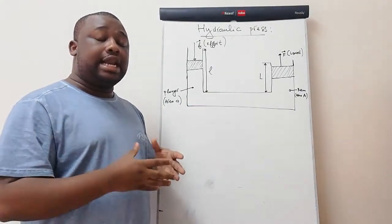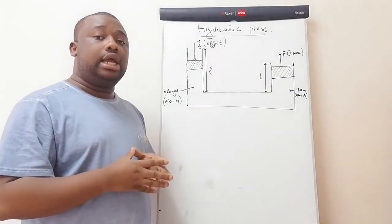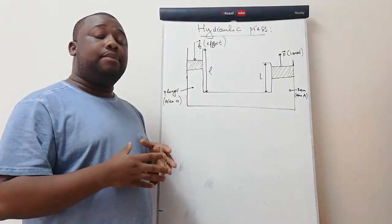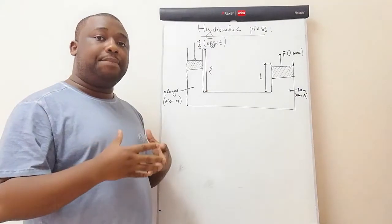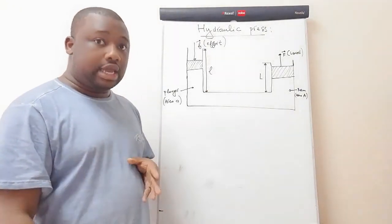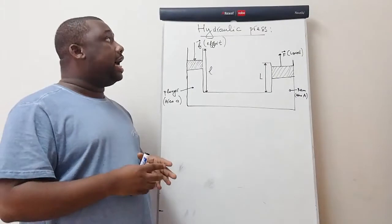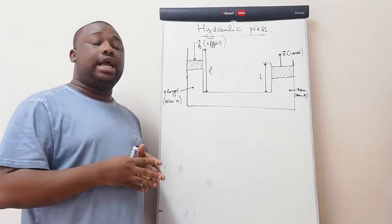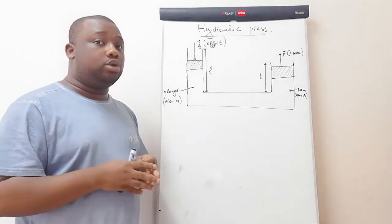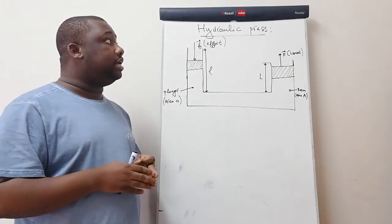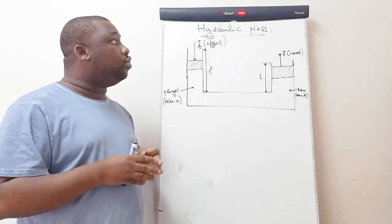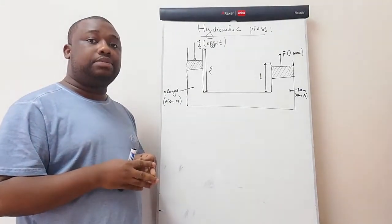After explaining how to do calculations on a hydraulic press, there's a question I'm going to put on the board and solve step by step. There are three main points I'm going to cover: the first is pressure, the second is volume, and the third is work done.